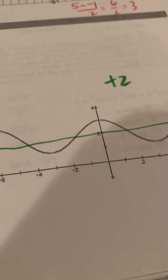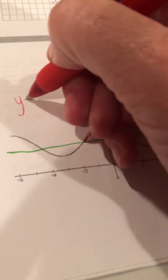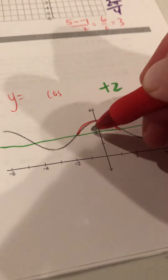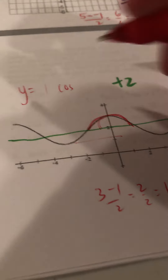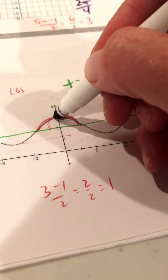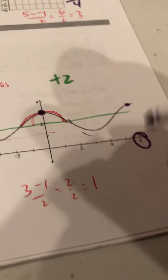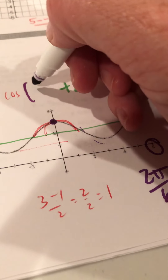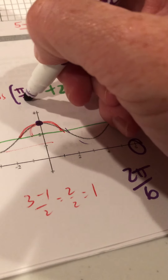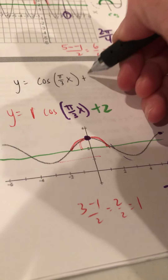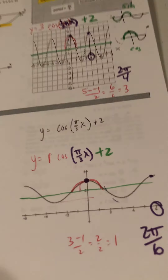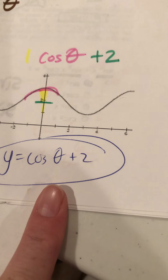Try this one: first find the midline — we can see it's plus 2. Is it sine or cosine? Cosine, because it's going around the origin. Amplitude: (3 - 1)/2 = 2/2 = 1. The period — it starts up and ends at 6, so 2π/6 reduces to π/3. The final answer is y = cos(π/3 · x) + 2.